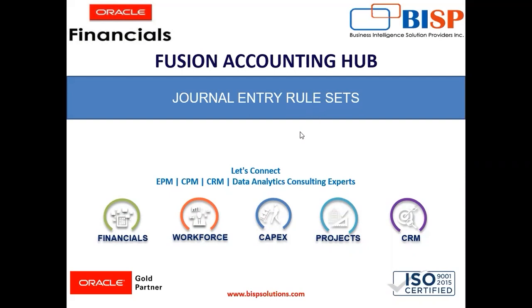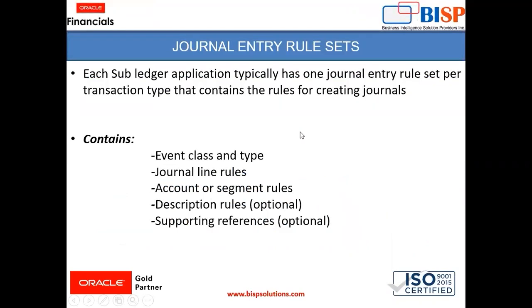First of all, what are journal entry rule sets? They contain the rules for creating journals in each subject application. Typically there is one journal entry rule set per transaction type. When creating journal entry rule sets, you need to provide: event class and type, journal line rules, account or segment rules, description rules, and supporting references. Description rules and supporting references are optional — they are not mandatory.